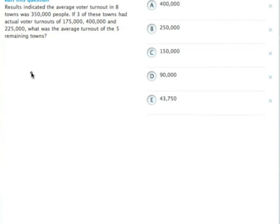We have the average voter turnout in 8 towns was 350,000 people. If 3 of these towns had these actual voter turnouts, then we need to figure out what the average turnout is of the 5 remaining towns.